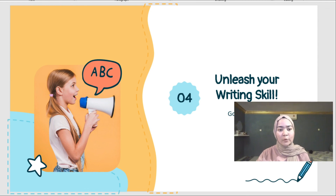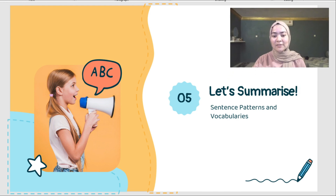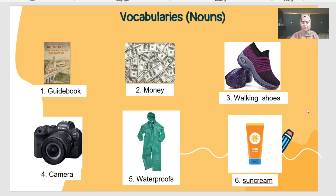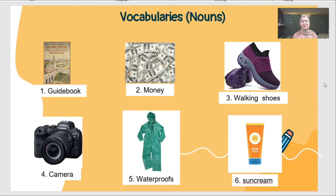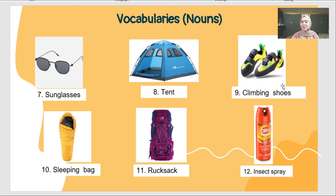Now we're going to summarize the lesson for today. I would like you all to list as many words and sentences as you have learned today in the comment section. Let's go through them quickly. Number 1: guidebook. Number 2: money. Number 3: walking shoes. Number 4: camera. Number 5: waterproofs. Number 6: suncream. Number 7: sunglasses. Number 8: tents. Number 9: climbing shoes. Number 10: sleeping bag. Number 11: rucksack. Number 12: insect spray. And here are the sentence patterns you can refer to for today's task.